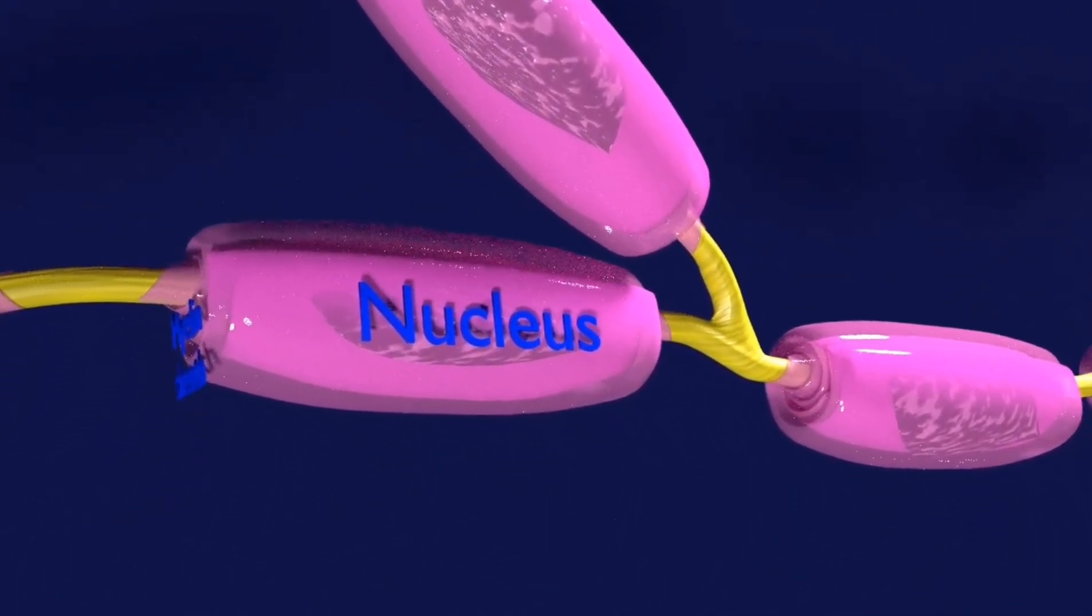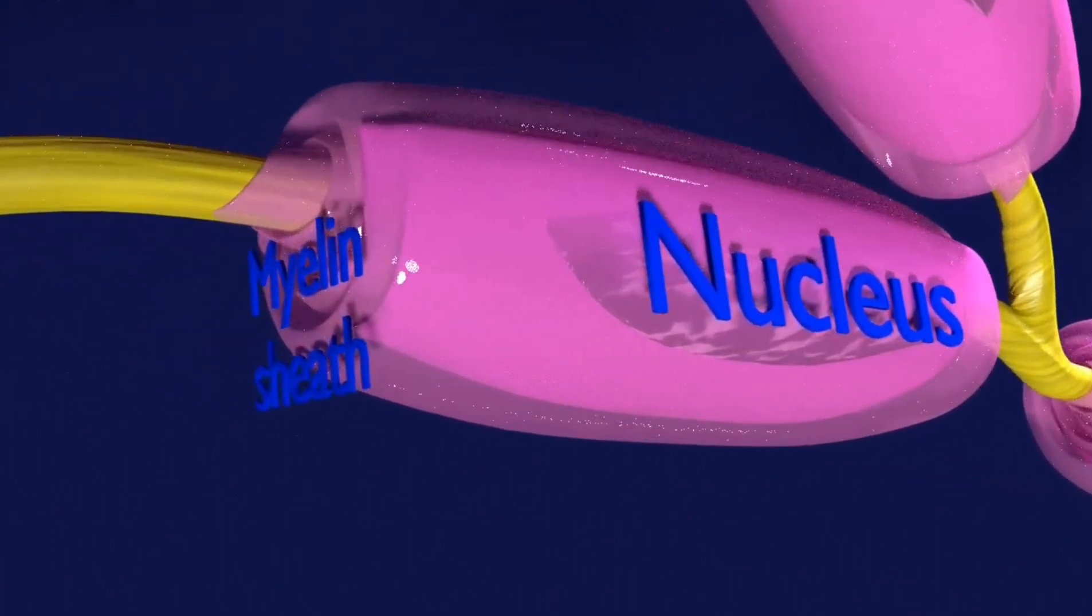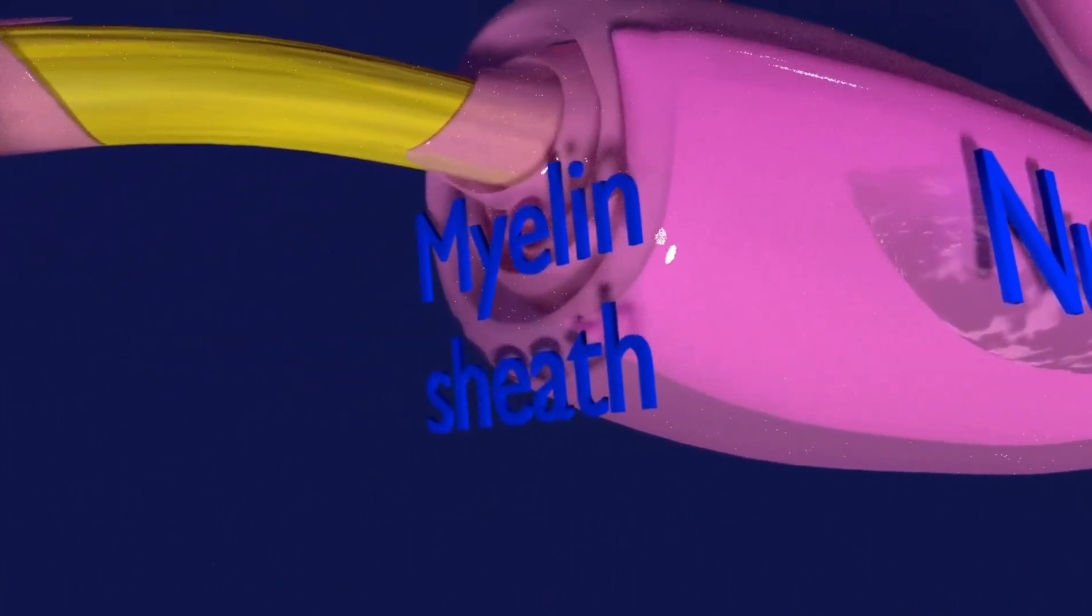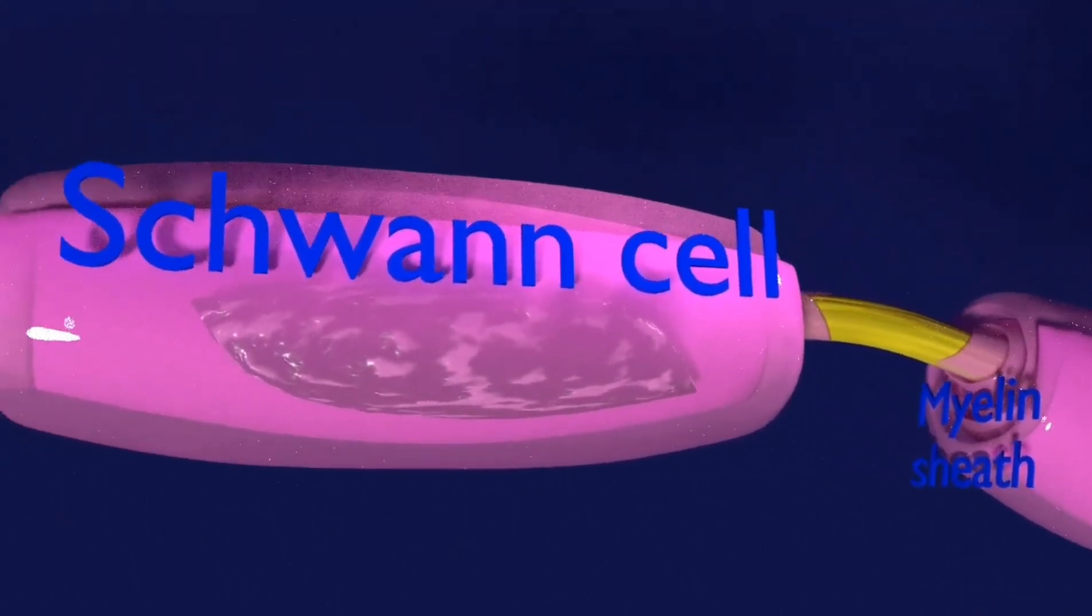Axons are covered with a special insulating substance called myelin. Each myelin sheath is formed from a single Schwann cell which helps convey the nerve impulse rapidly. Myelin is never found on dendrites.